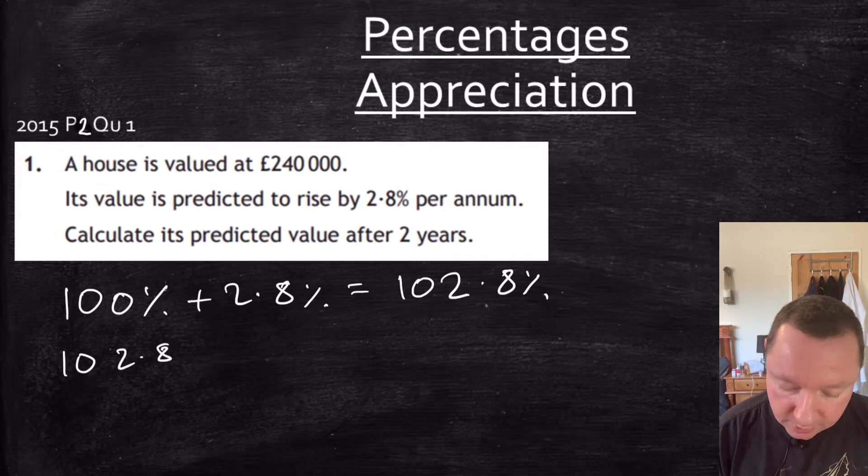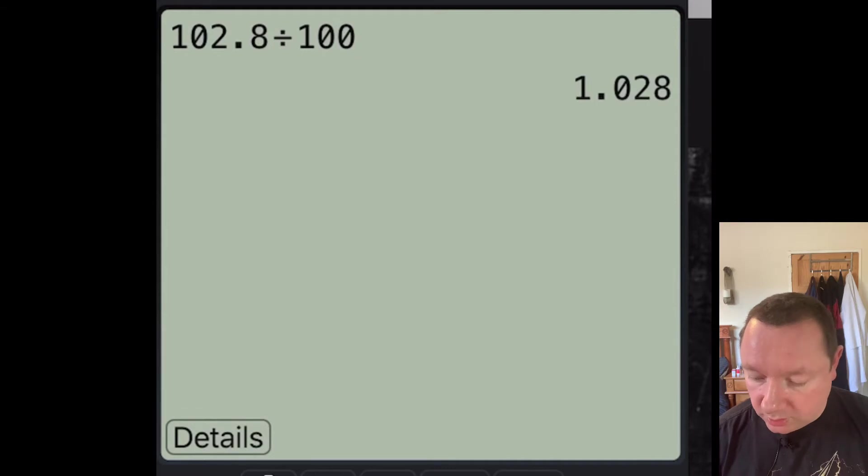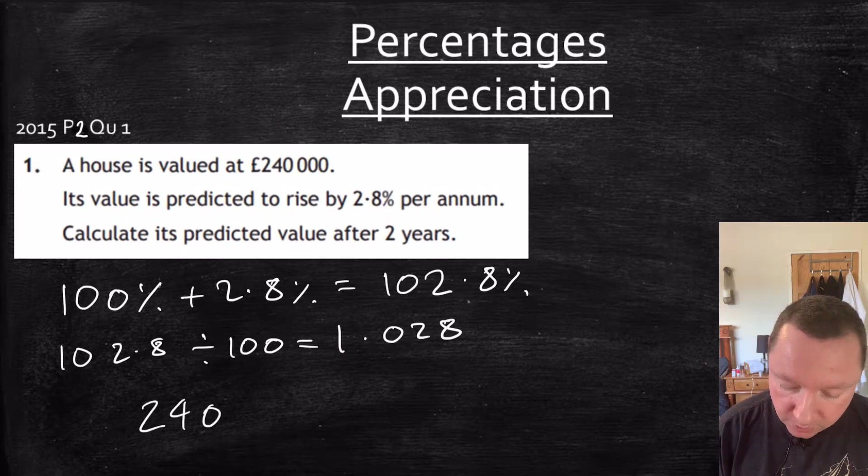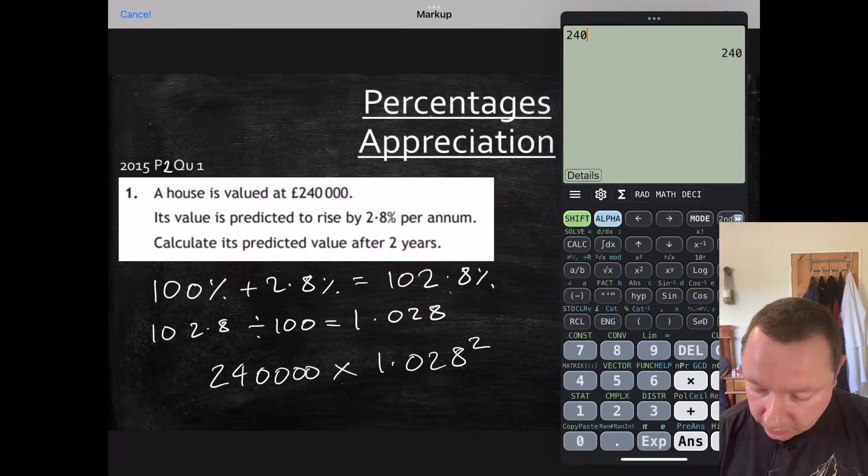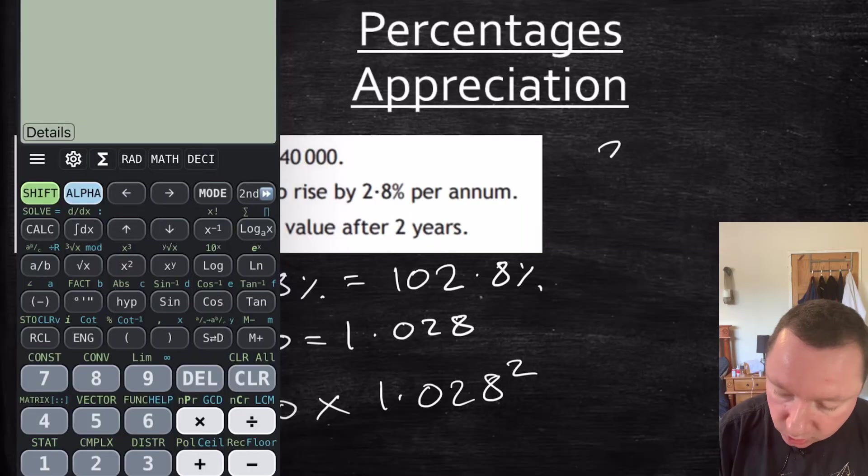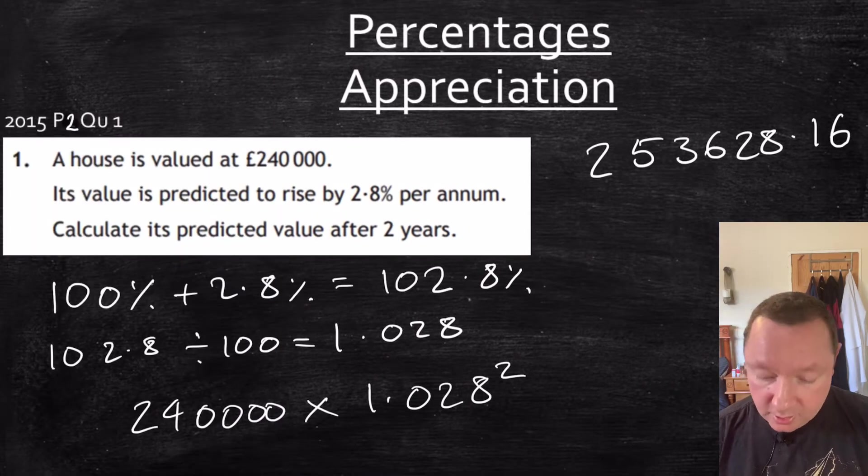So we'll do 102.8 divided by 100. And to be safe, I'll use a calculator. 102.8 divided by 100, 1.028. So that is my key number. That's my multiplier. Because now what I'm going to do is take my £240,000 times my multiplier. And it's to the power of however many years or the time frame. So in this case, 2. 240,000 times 1.028 to the power of 2. And I get 253,628.16. Last thing, don't forget your £ sign.